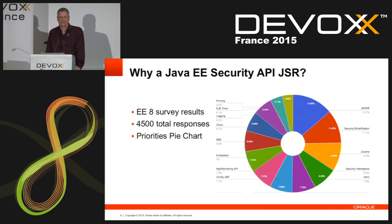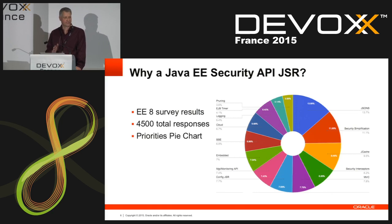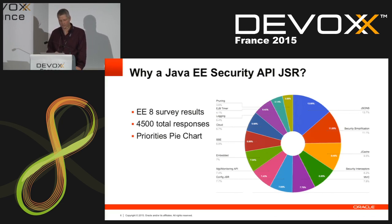It all started with a survey they had last year — the EE-8 survey. At the beginning of the EE-8 cycle, the EE platform group presented a survey to the community. There were 4,500 total responses. The results came out as a pie chart, and what you'll notice is that the second and fourth most popular items are security related. Security simplifications and security interceptors take up about a fifth of the pie chart. That brought attention that we ought to get back to the EE security API and clean it up, make it simpler and more modern.